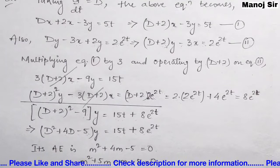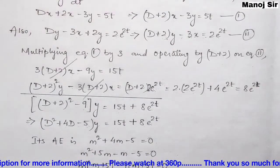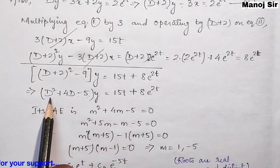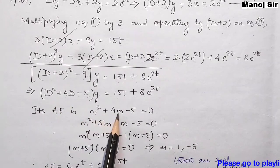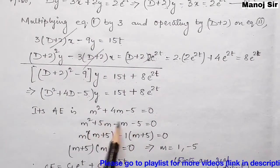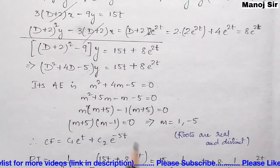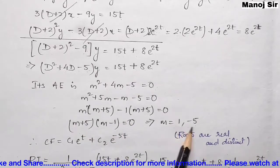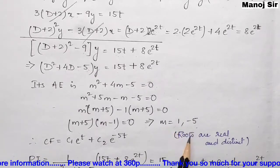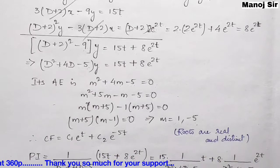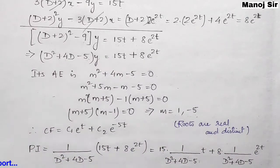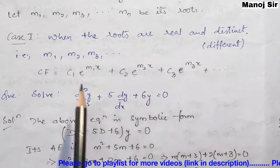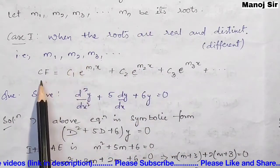To find the auxiliary equation, set the coefficient of y equal to zero, replacing D with m: m² + 4m − 5 = 0. Solving this gives m = 1 and m = −5. Since the roots are real and distinct, we proceed with the complementary function formula.